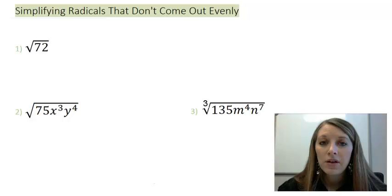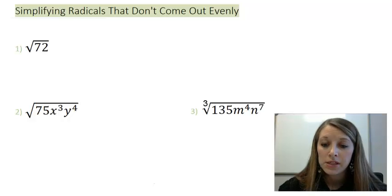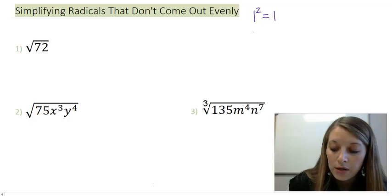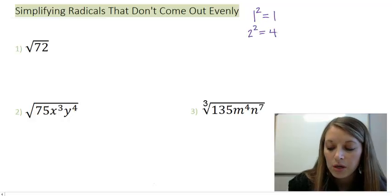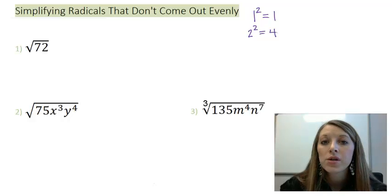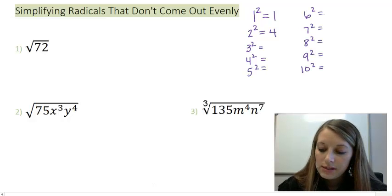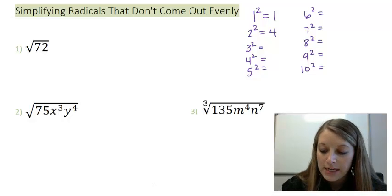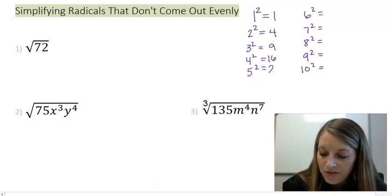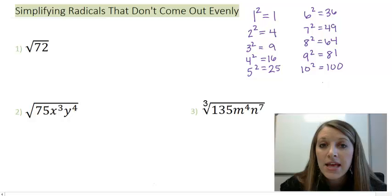If I think to this, square root of 72 does not come out evenly. And if you don't believe me, then I suggest that you write down the list of squares. Starting with 1 squared is 1, 2 squared is 4, and so on and so forth. I suggest that you pause the video and write out your list of squares all the way up to 10 squared at the minimum. I have them written out here: 3 squared is 9, 4 squared is 16, 5 squared is 25, 6 squared is 36, 7 squared is 49, 8 squared is 64, 9 squared is 81, 10 squared is 100.